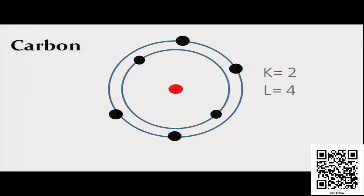For example, we had discussed that carbon containing six electrons is distributed in two shells: in the K shell two electrons and in the L shell four electrons. Here for carbon the L shell is the outermost shell.